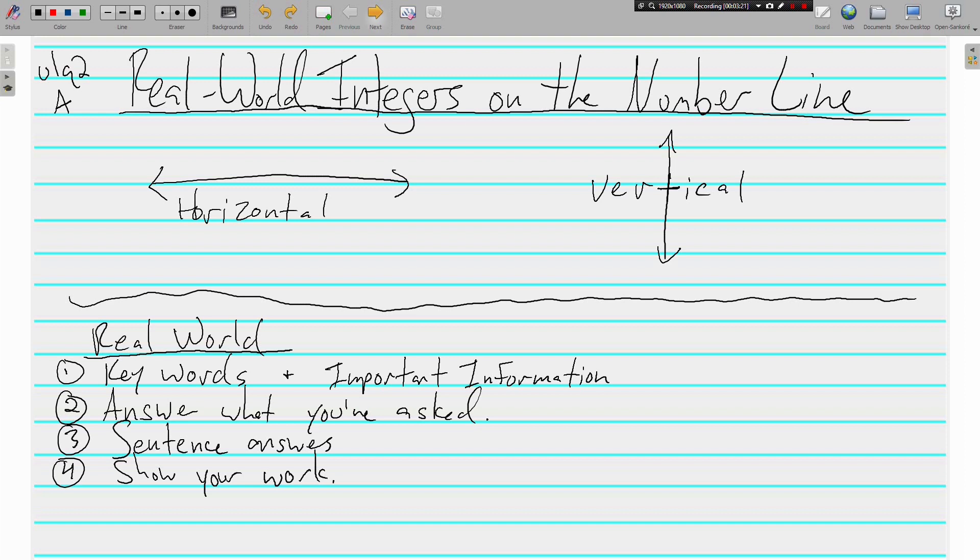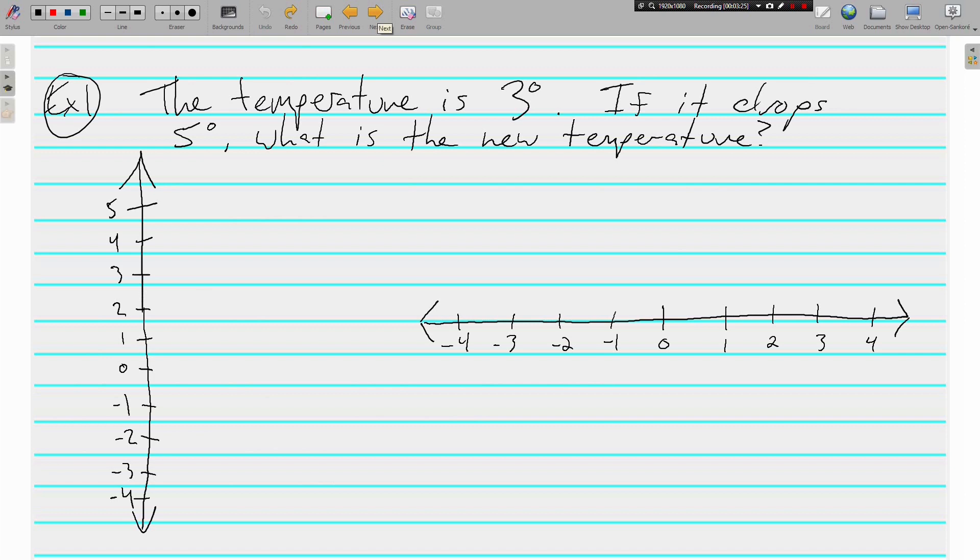Let's look at some integers on the number line problems. Example one, I've already got ready to go for you. If you need to pause so that you can write it down, that's fine, but I would like you to have this in your notes, please. Here we go. The temperature is 3 degrees. If it drops 5 degrees, what is the new temperature? First thing, keywords. What are our keywords? What is the important information in this problem?